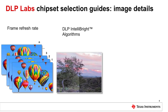DLP IntelliBright algorithms consist of a suite of image processing algorithms: Local Area Brightness Boost, or LABB, and Content Adaptive Illumination Control, or CAIC. Local Area Brightness Boost is a TI image processing algorithm that adaptively enhances, or gains up, dim regions of an image on a frame-by-frame basis, resulting in brighter, more dynamic images. Content Adaptive Illumination Control is a TI image processing algorithm which offers either power reduction, brightness enhancement, or a combination of the two.